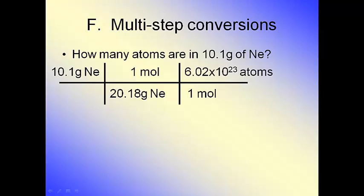Well, that's it. I did everything in one gigantic long conversion. So now how do I calculate this? I multiply everything on the top. I divide by everything on the bottom. And I get 3.01 times 10 to the 23 atoms of neon. And that's it. It's that simple.